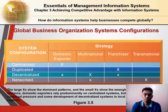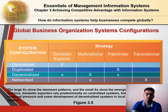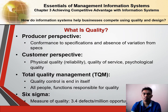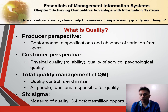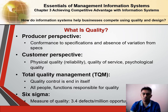This figure shows the global business organization and systems configuration. What is quality? One strategy is to produce the highest quality product or service and charge accordingly. Information systems have historically played a key role in the quality movement by aiding in the measurement of quality and helping managers model and optimize business processes.